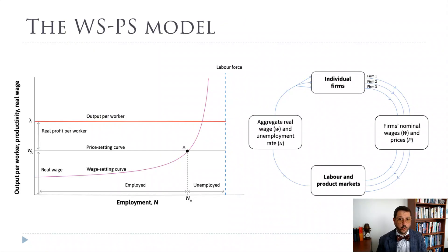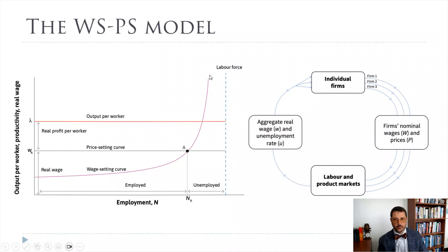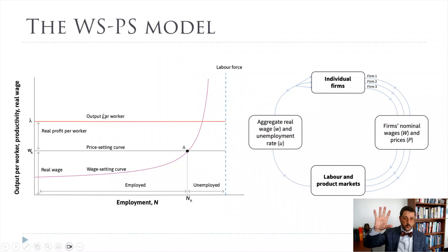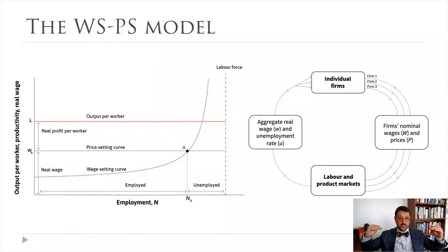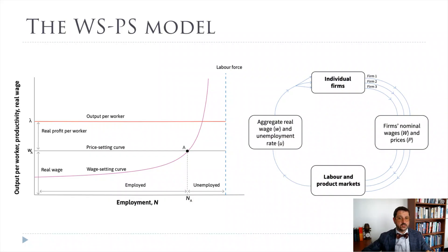We can put these two curves together. We have our upward sloping wage setting curve — that's in purple — and our horizontal price setting curve — that's in gray. The output per worker is here, and that is hugely important because if we can increase output per worker, for any given profit level, that's going to increase our wage.